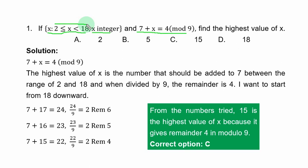To solve this modular equation using the given interval, you look for the highest value of s to add to 7 so that when you divide by 9 the remainder is 4. In modular arithmetic we are only interested in the remainder. We start from 17 downward because s is less than 18.